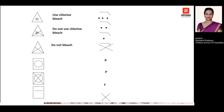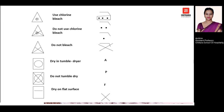For drying symbols, if you have a rectangle with a circle inside, it means dry in a tumble dryer. If it has a cross mark, it means the tumble dryer is not required. If the rectangle has a straight line inside, it means dry that particular fabric or garment on a flat surface — do not hang it; it has to be dried on a flat surface.